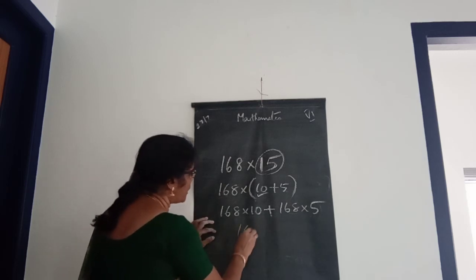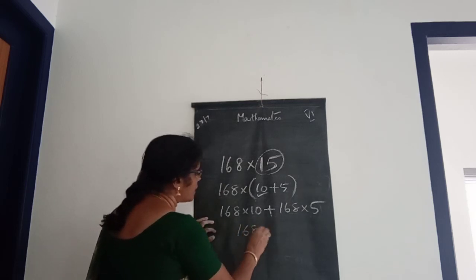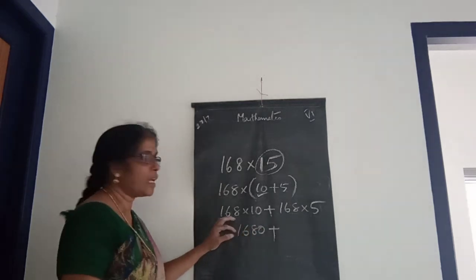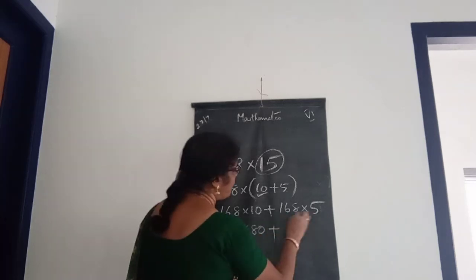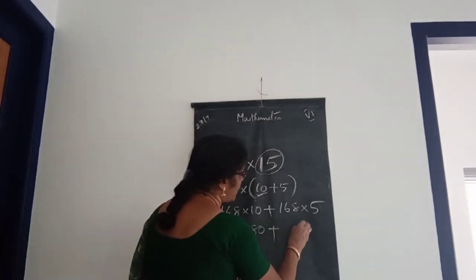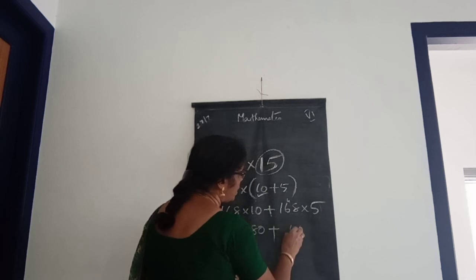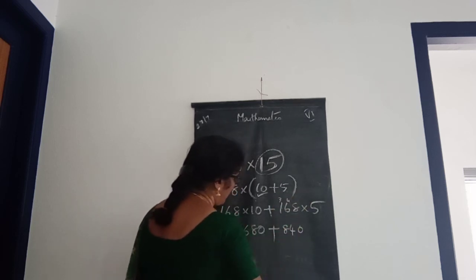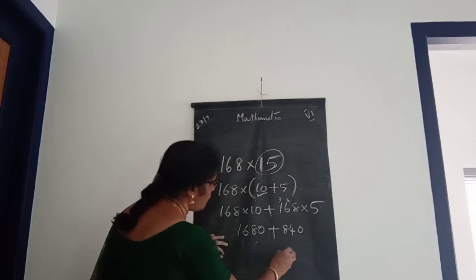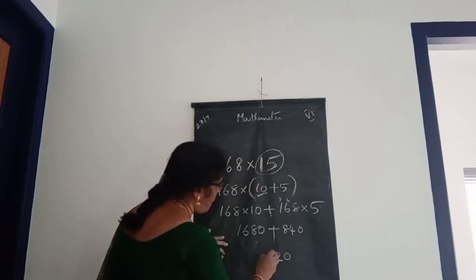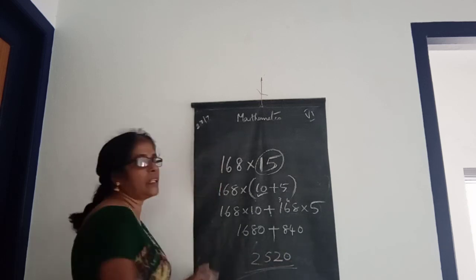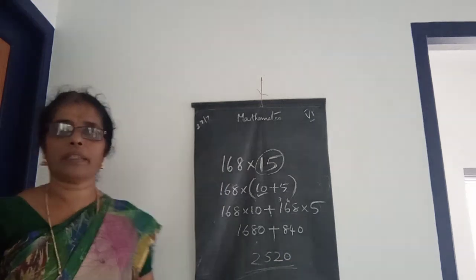168 into 10 is 1,680. And what is 168 into 5? 5 and 8 are 40, write 0 carry 4; 5 and 6 are 30 plus 4 is 34, write 4 carry 3; 5 and 1 is 5 plus 3 is 8 — so 168 into 5 is 840. Then 1,680 plus 840 gives 2,520. That is another method.